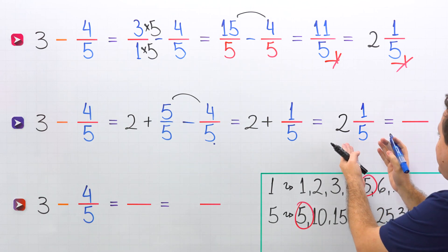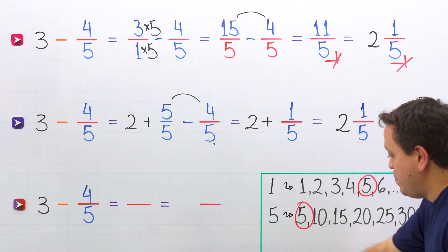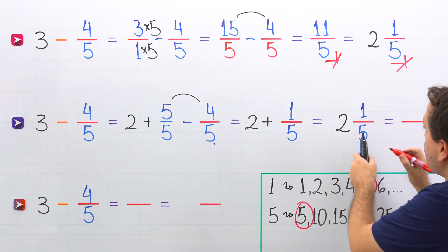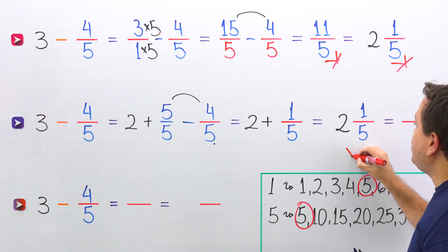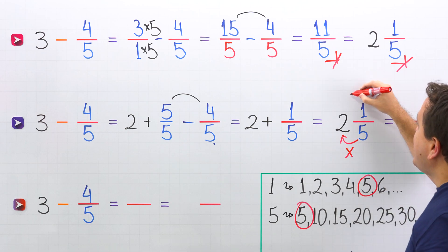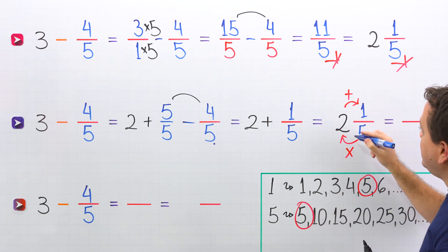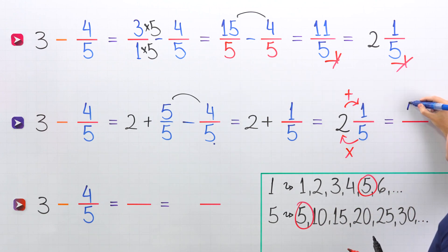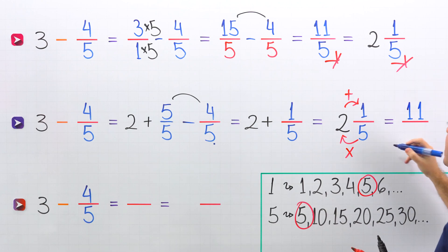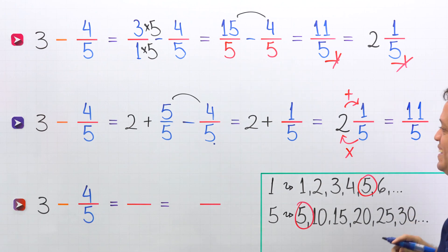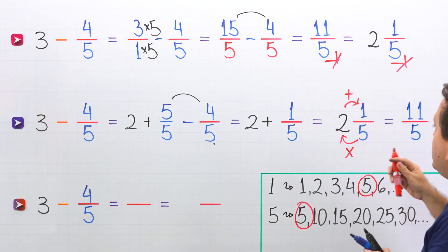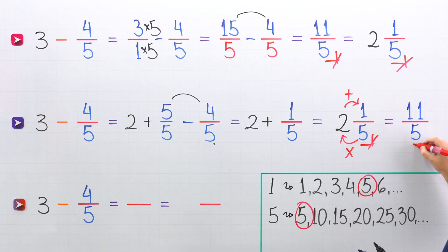Also, we can convert a mixed number to an improper fraction. We're going to convert 2 and 1 fifth to an improper fraction. We'll start by multiplying the denominator by the whole number, and then we add this result to the numerator. 5 times 2 is 10, plus 1 gives us 11. And then the denominator stays the same — 5. Once again, 3 minus 4 fifths gives us 2 and 1 fifth or 11 fifths.